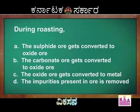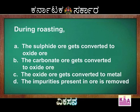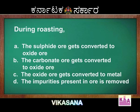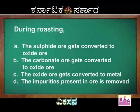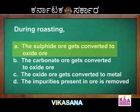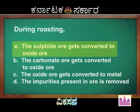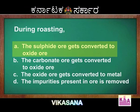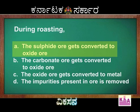Keeping these key notes, let us analyze the options. During roasting: the sulfide ore gets converted to oxide ore; the carbonate ore gets converted to oxide ore; the oxide ore gets converted to metal; the impurities present in ore are removed. Option A — sulfide ore gets converted to oxide ore — is the right option for roasting. Option B would be correct for calcination. Option C describes reduction. Option D describes concentration of the ore. So all four points have been discussed, and option A is correct.